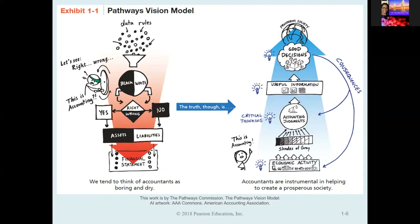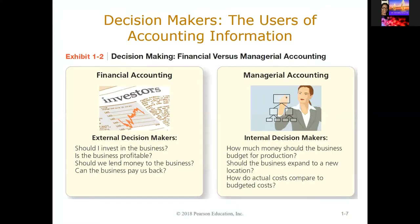Accountants play a critical role in supporting a prosperous society. Accounting is divided into two fields. The first field is financial accounting and the second is managerial accounting. Financial accounting provides information for external decision makers, such as outside investors, lenders, customers, and government entities. Managerial accounting, on the other hand, focuses on information for internal decision makers, such as the company's managers and employees.